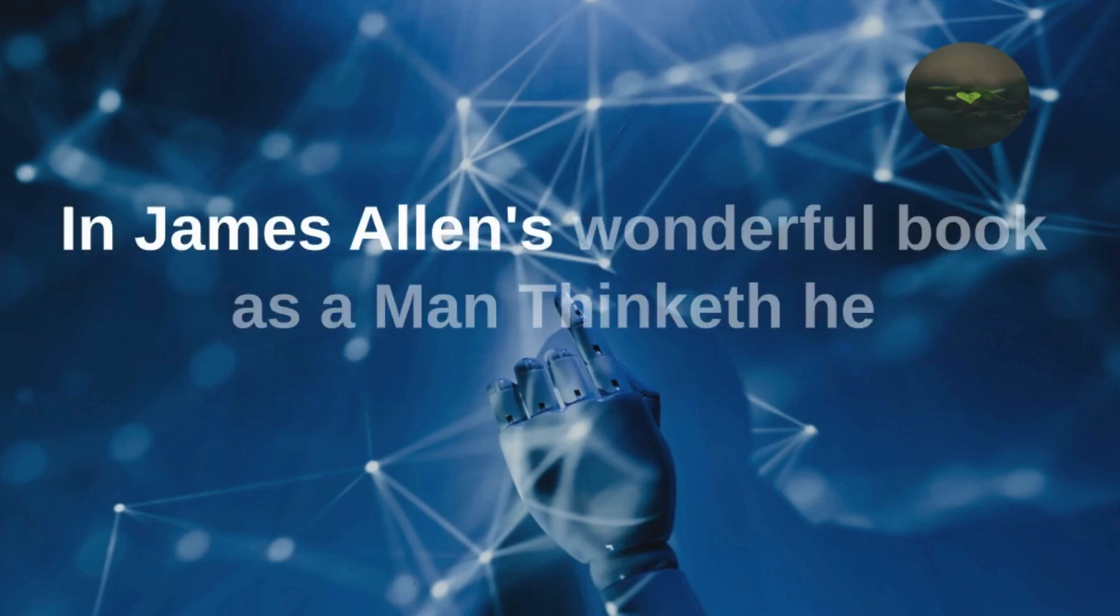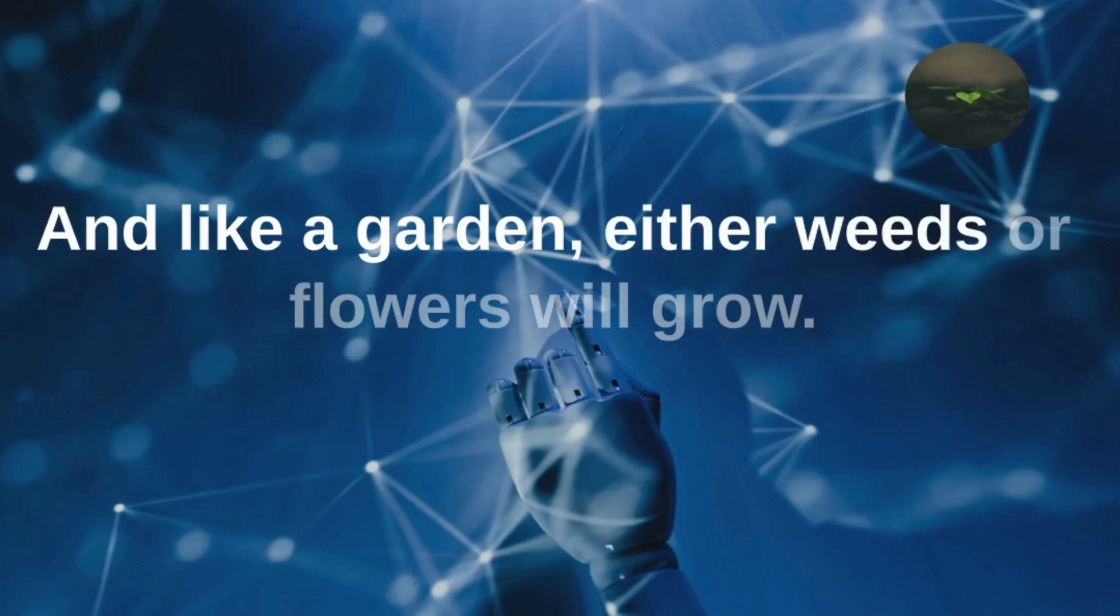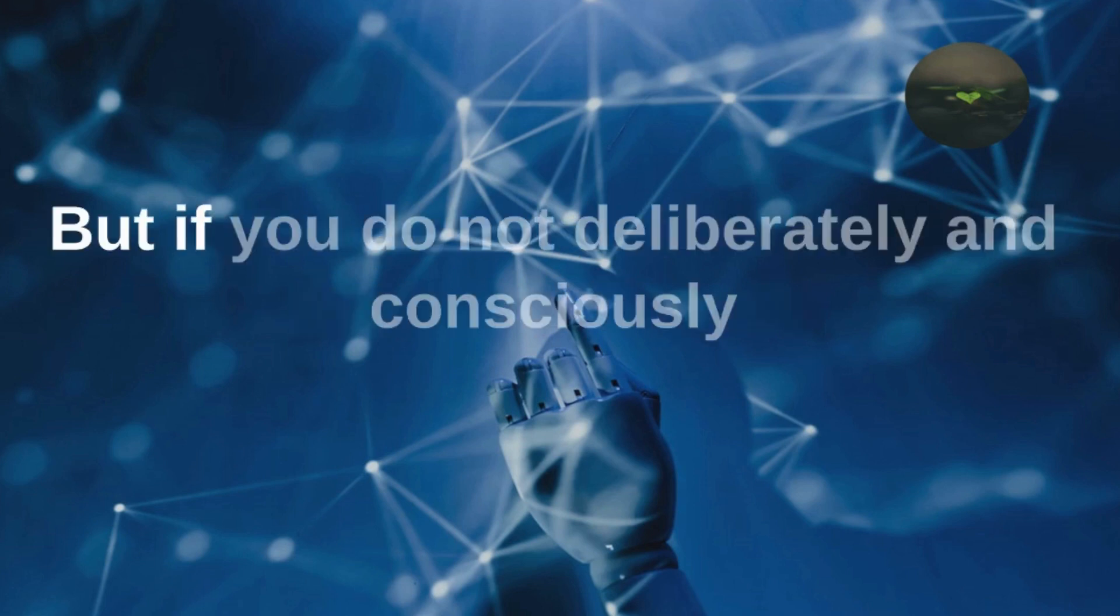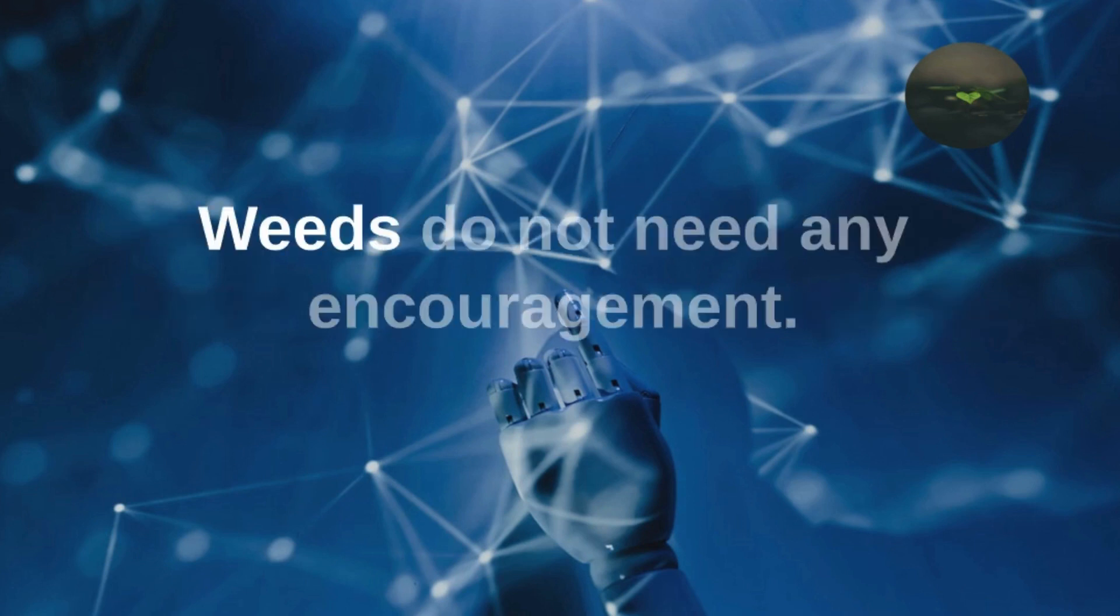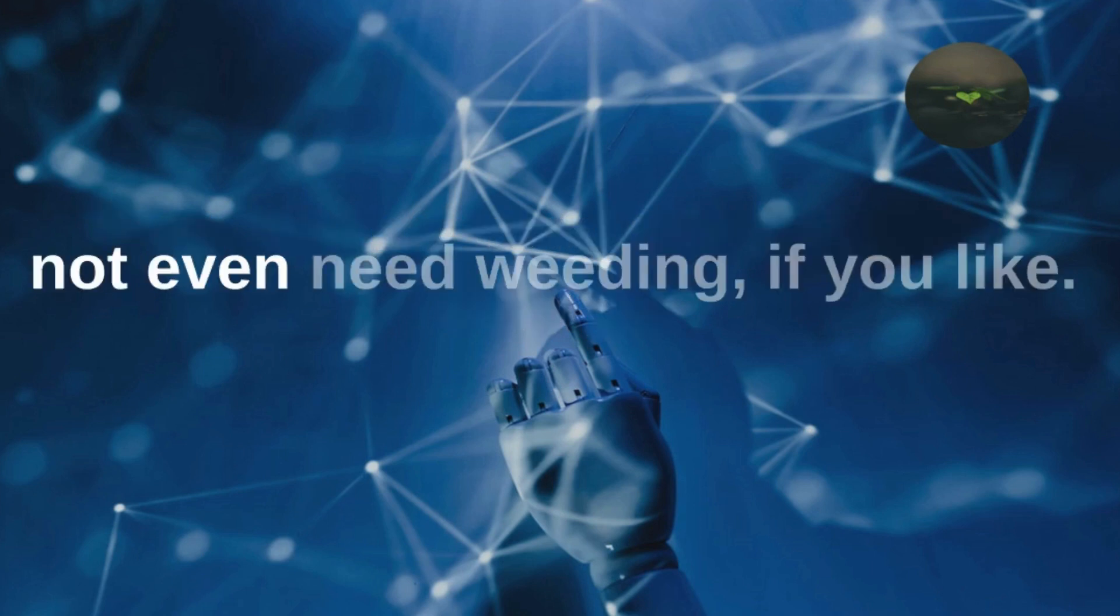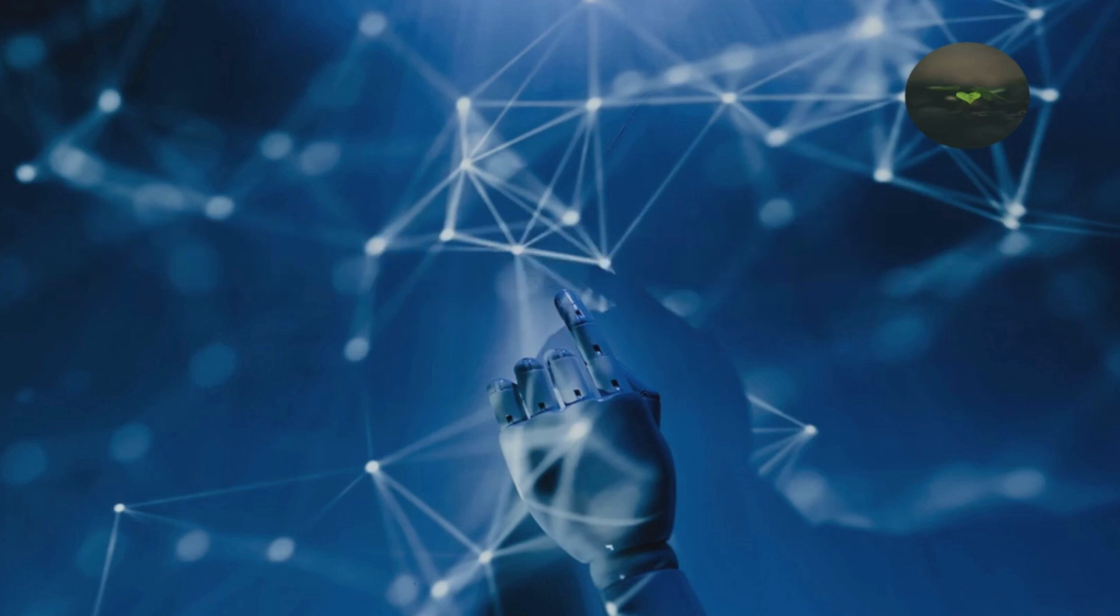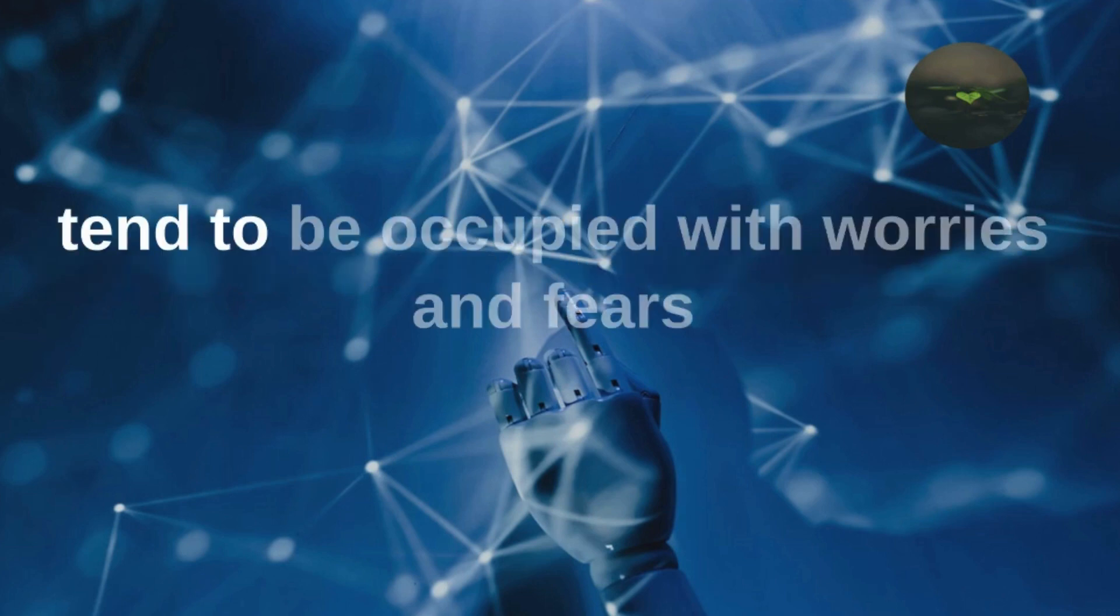In James Allen's wonderful book, As a Man Thinketh, he says that the mind is very much like a garden. Like a garden, either weeds or flowers will grow. But if you do not deliberately, consciously, and purposely plant flowers, weeds will grow automatically. Weeds do not need any encouragement, nutrition, fertilizer, or even weeding.